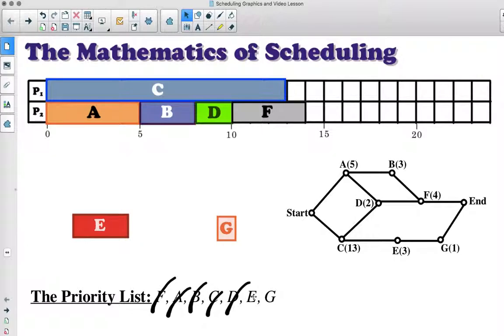Next on our list is E. E cannot be started until C is completed. We see that C gets completed here at time 13. So E can go right after that task. So processor one, as soon as they finish, task C can immediately start task E. We see the graph shows us that. And we'll be busy until time 16. I can cross E off the list.